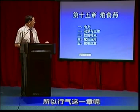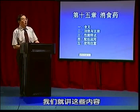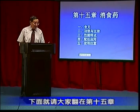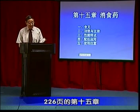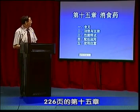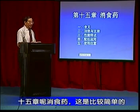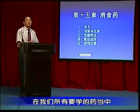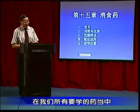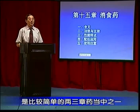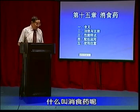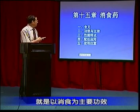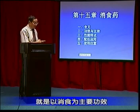下面请大家翻到第十五章，226页，第十五章消食药，这是比较简单的，在我们这个所有药学的药当中，是比较简单的两三章药当中之一。什么叫消食药呢？就是以消食为主要功效，主要用来治疗饮食积滞的药物，就称为消食药。